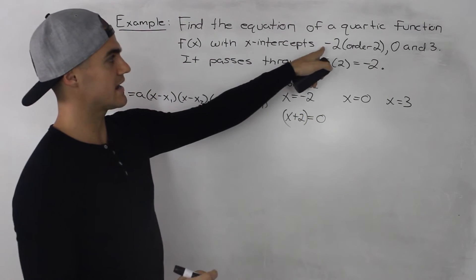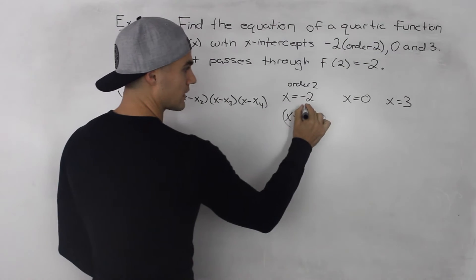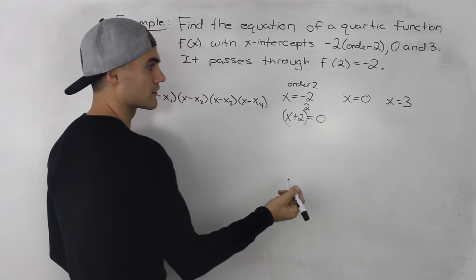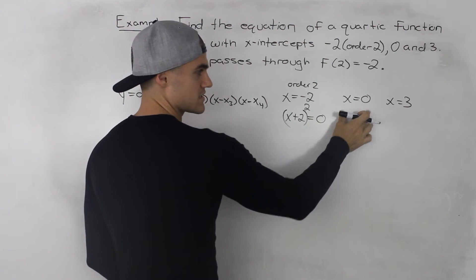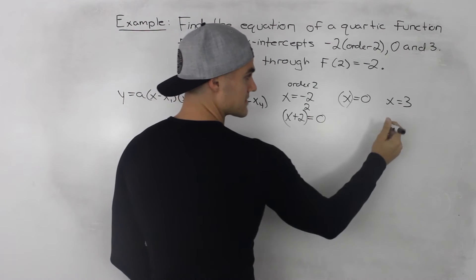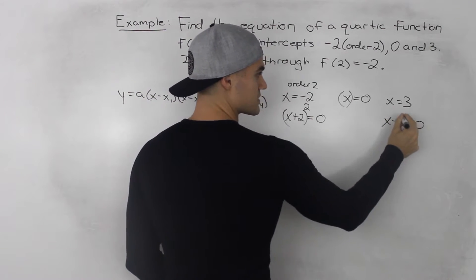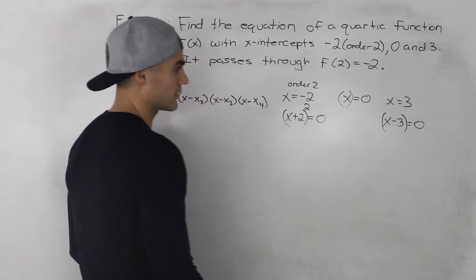Now because this -2 has an order of 2, that means that this bracket here will be squared. x = 0, we can't rearrange that any further, so that would be another bracket. And then x = 3, we can rearrange that as x - 3 = 0. So that would be the other bracket.